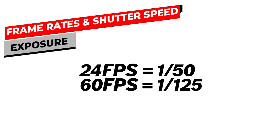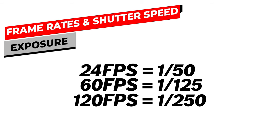If you're shooting 60 FPS, you would have a shutter speed of 1/125. At 120 frames per second, your shutter speed would be 1/250. So to recap: the first thing you need to do is establish from a creative standpoint what frame rate you're going to shoot this project in and why, then double that to establish your shutter speed. I told you it wouldn't be that hard.